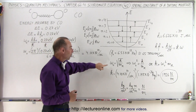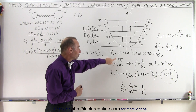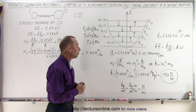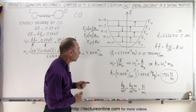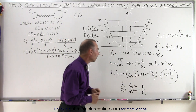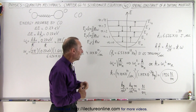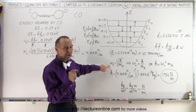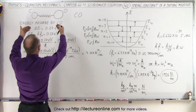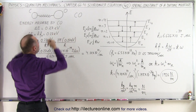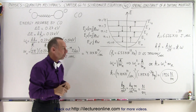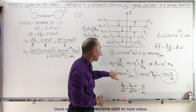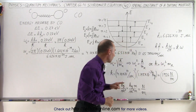Going back to the equation where angular frequency omega equals the square root of k over m — where m is the reduced mass found in a previous video for a carbon monoxide molecule — we now use this equation to find k, given that we know the vibrational frequency based on the observed emission or absorption of energy by the molecule. So k can be defined as omega squared times the reduced mass.